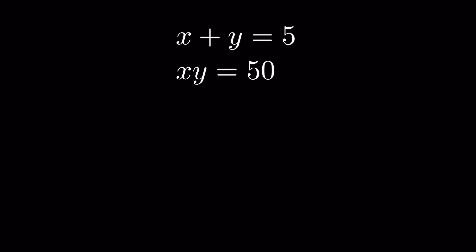If x plus y is equal to 5 and x times y is equal to 50, find the value of x and y.